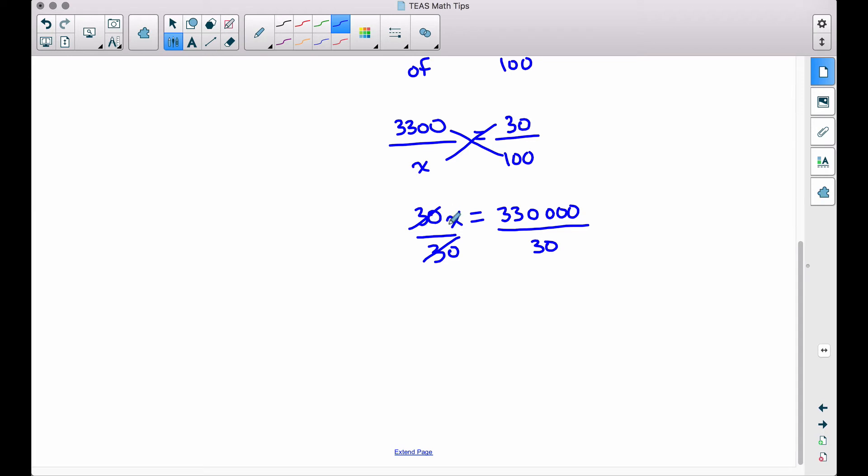And the inverse operation of multiplication is division, so that's why we're doing that over here. And dividing 330,000 divided by 30, we get $11,000.